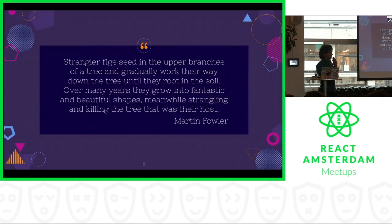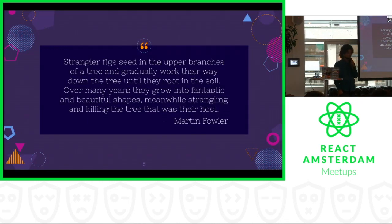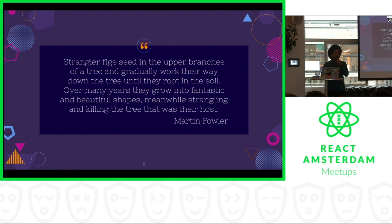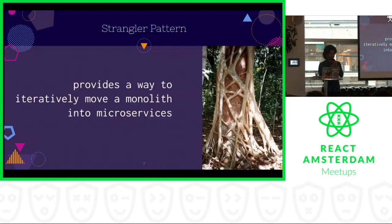To combat this, we use a pattern called the strangler pattern, which was coined by Martin Fowler during one of his trips to Australia. A strangler fig is a tree that grows around another tree, and it slowly starts taking the shape of the original tree while the tree inside gradually dies out. The strangler pattern provides us a way to iteratively move a monolith into microservices.